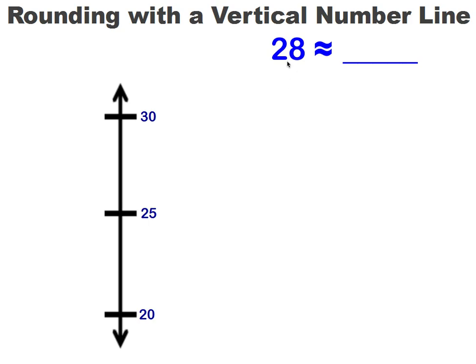Now we just need to decide where we're going to place our 28. Where would 28 fall? It would have to be around here somewhere. Because it would go 25, 26, 27, 28. So 28 would be about here on our number line.